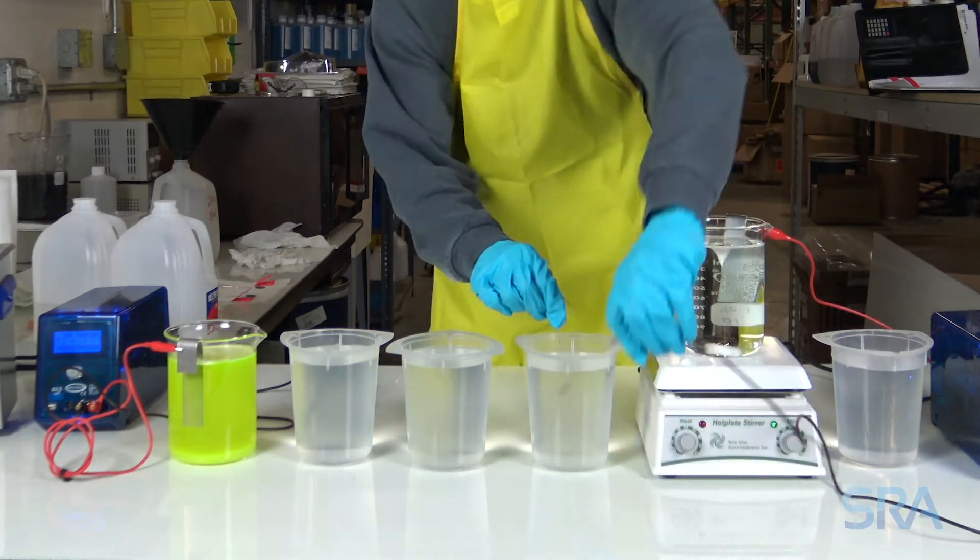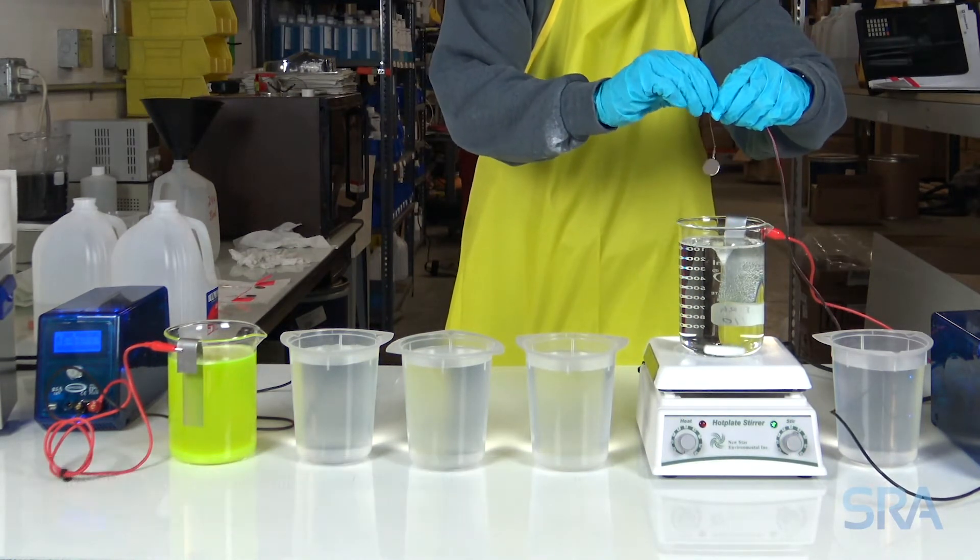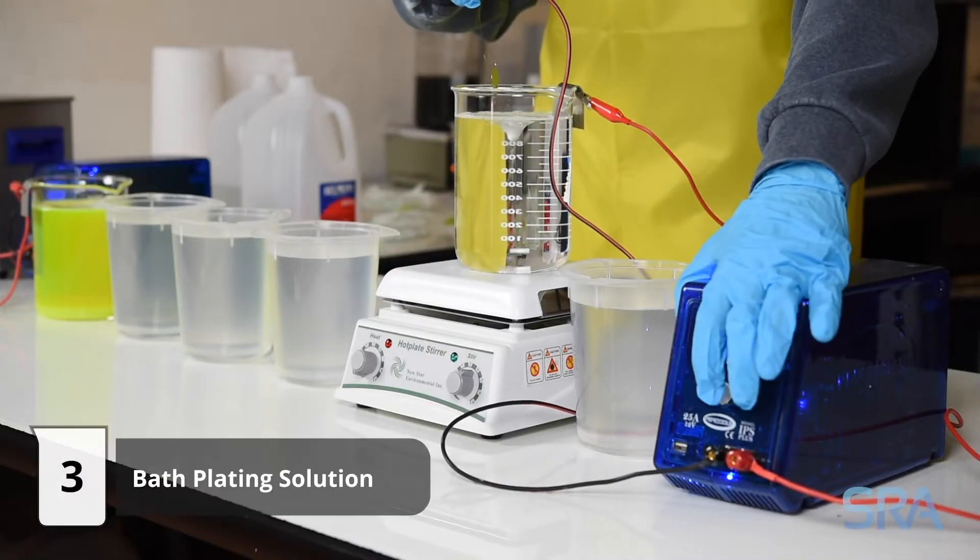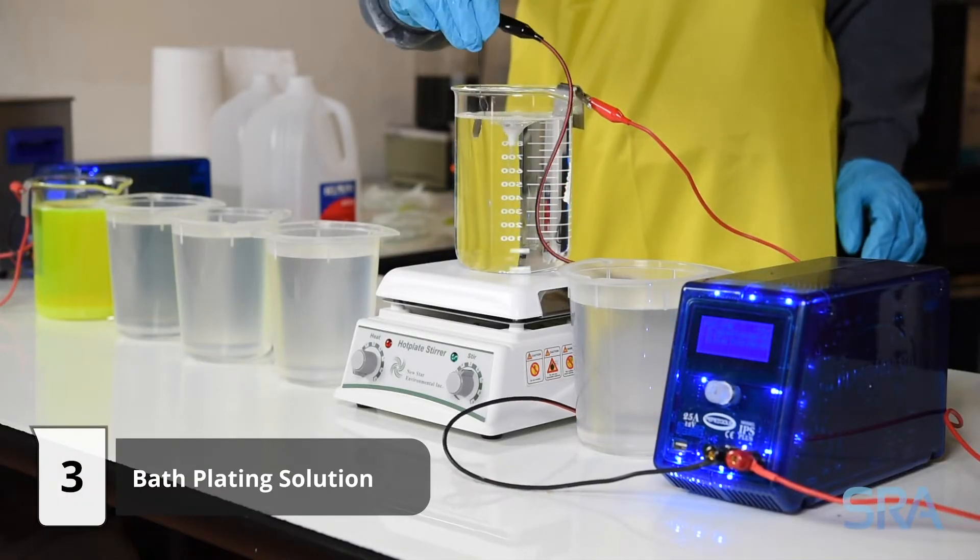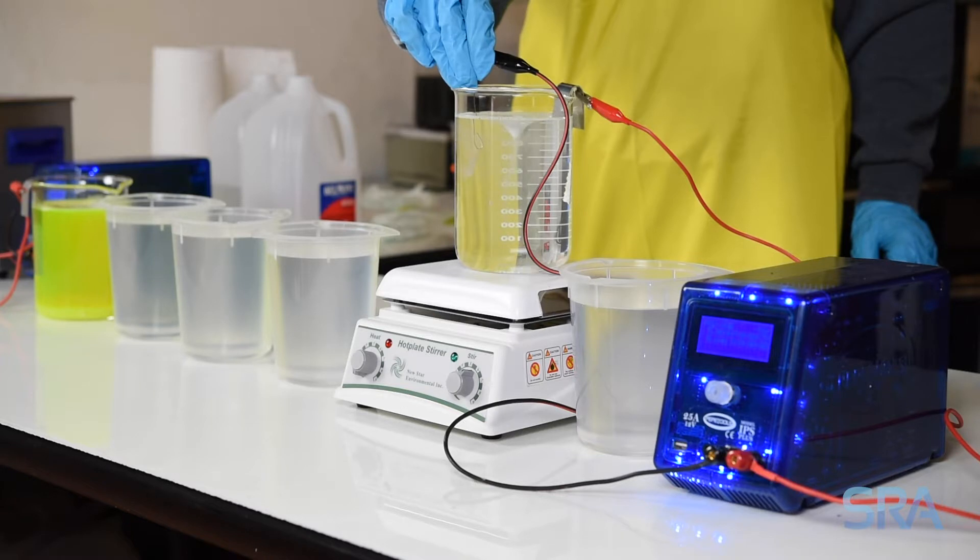Finally, connect the negative lead from the plating rectifier to your item, turn on the unit, and begin plating. We're going to plate for about 40 seconds at 110 degrees Fahrenheit with 5 volts applied to the stainless steel anode.